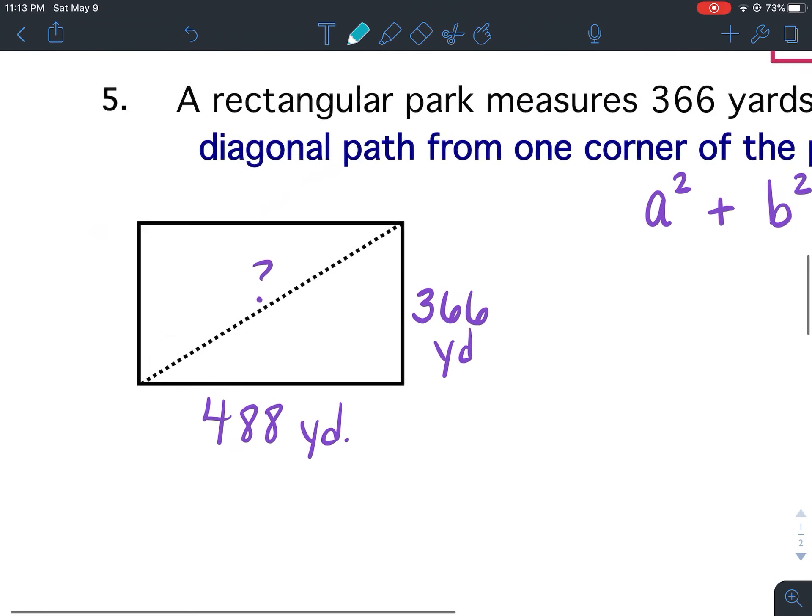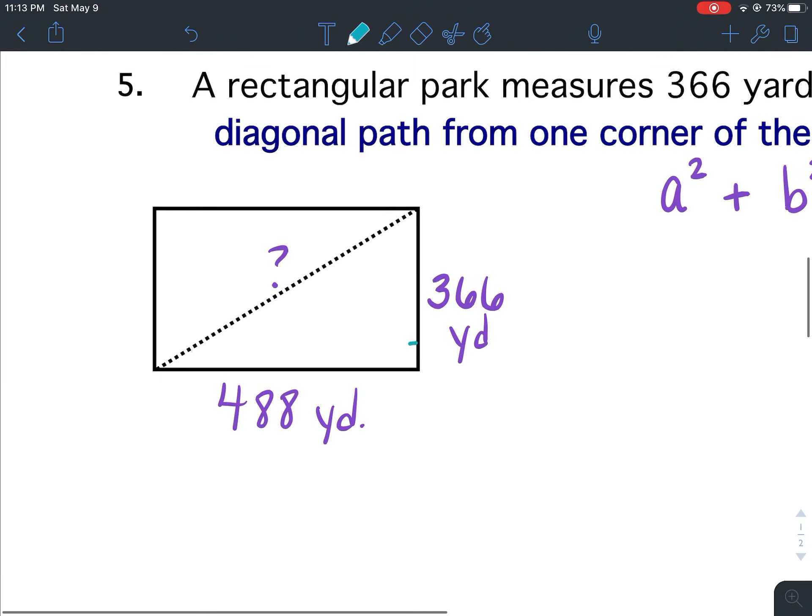Now remember it's a rectangle so if it's a rectangle that means that this right here is a right angle. The right angle points to you guessed it the hypotenuse. So this will be C.